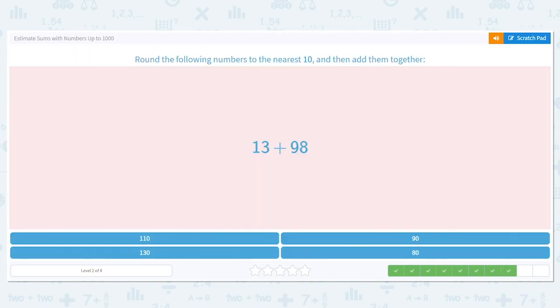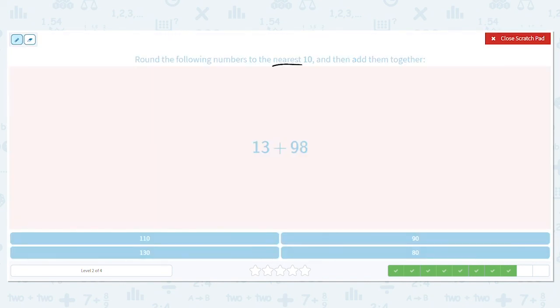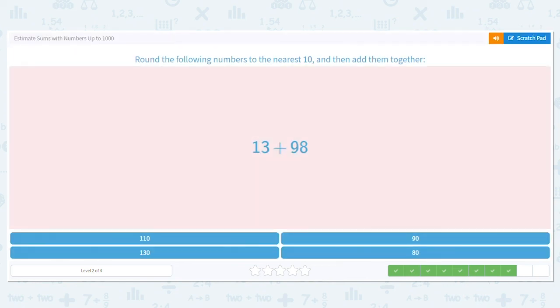Alright, this time still rounding to the nearest 10. 13, what does 13 round to? That rounds to 10. Awesome. How about 98? Does 98 round down to 90 or up to 100? It's really close to 100, so it rounds up to 100. So if I have 100 and I add 10 more to it, it is 110. So my estimate is 110.